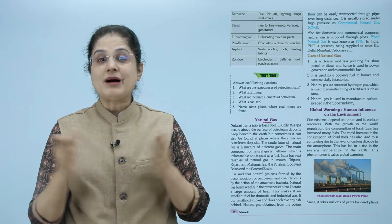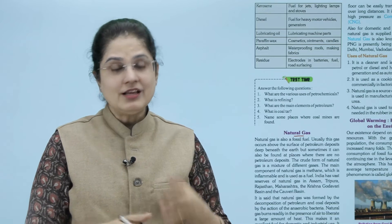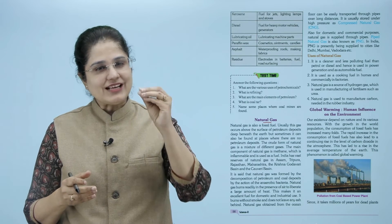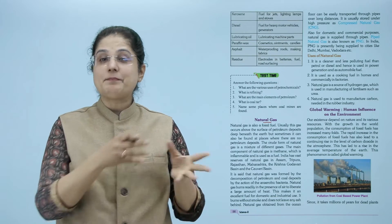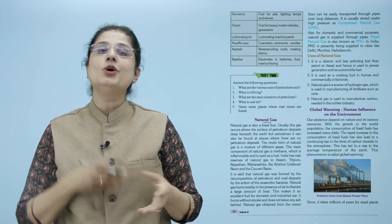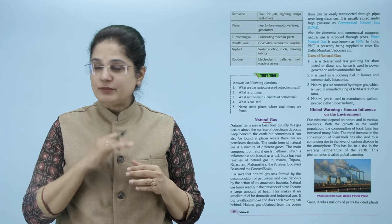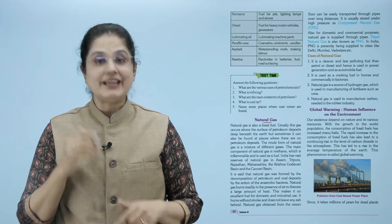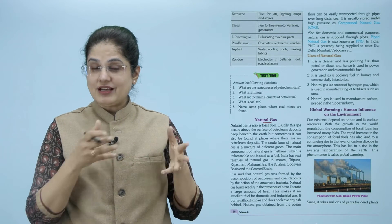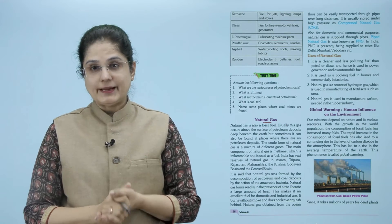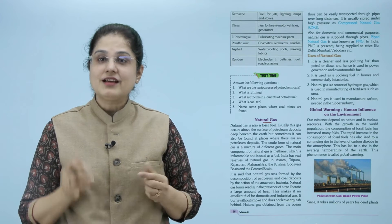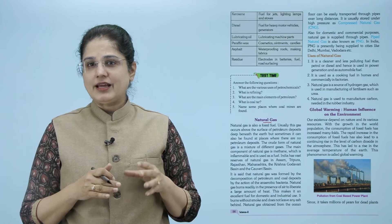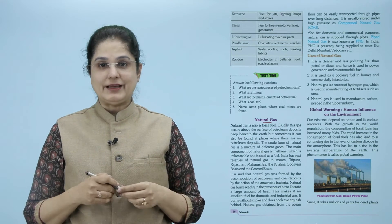Natural gas बड़ी easily air की presence में burn होती है और heat की बहुत ज़्यादा amount release करती है। इसकी वजह से ये एक excellent fuel है जो घरों में और industries में use होता है। Natural gas जलती है तो धुआँ नहीं उठता और इससे ash बचती नहीं। Natural gas ocean bed से मिलती है और बड़े आसानी से वहाँ से pipes के through अलग-अलग जगह long distances तक transport कर सकते हैं। इनको बड़े high pressure में store किया जाता है और जब ऐसे store किया जाता है तो इनको कहते हैं compressed natural gas - CNG। Domestic और commercial purposes में जो gas directly pipe के through supply होती है उसको pipe natural gas याने PNG कहते हैं। India में currently PNG Delhi, Mumbai, Vadodara जैसी cities में supply होती है।